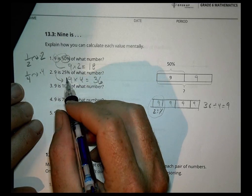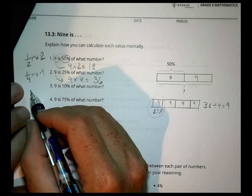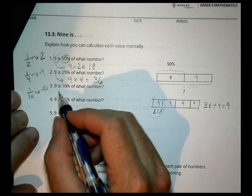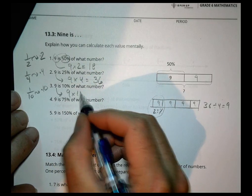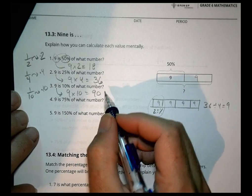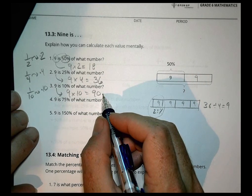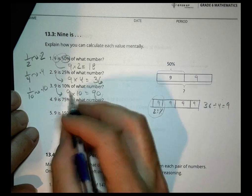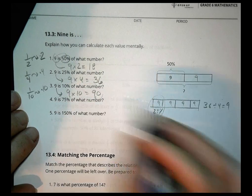And the next one, 9 is 10% of what number? Again, 10% is found by doing 1 tenth, so the reciprocal of that is multiplying by 10, so 9 times 10 is 90. And if you thought about 10%, we would move it over there, and that's how we get 9.